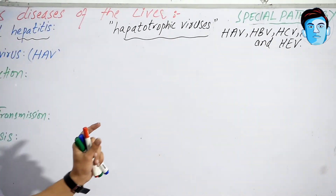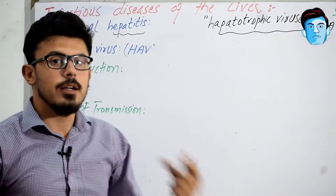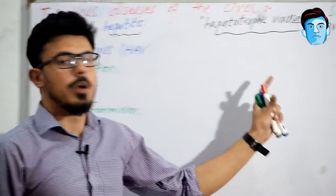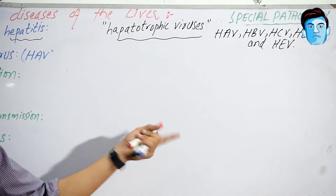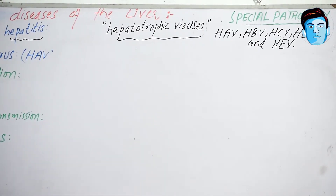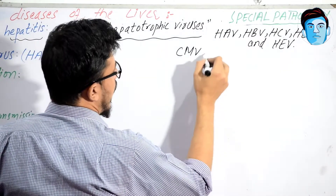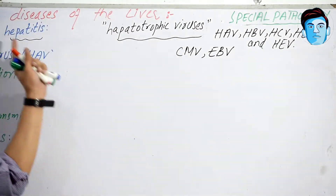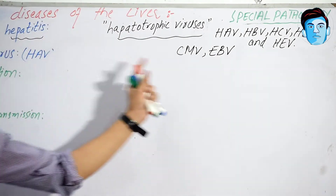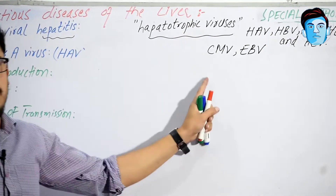In another category, there are viruses that do not primarily infect the liver but can cause secondary liver infection — these are cytomegalovirus and Epstein-Barr virus. They can cause viral hepatitis but are not termed hepatotrophic viruses.